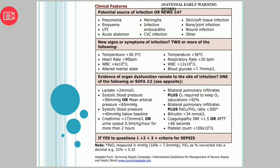New signs or symptoms of infection: if two or more of the following are present, we can say the patient is in sepsis. These include temperature more than 38°C or below 36°C, heart rate more than 90 beats per minute (tachycardia), respiratory rate more than 20 breaths per minute (tachypnea), WBC count less than 4×10⁹/L or more than 12×10⁹/L, altered mental state, or abnormally increased blood glucose level.